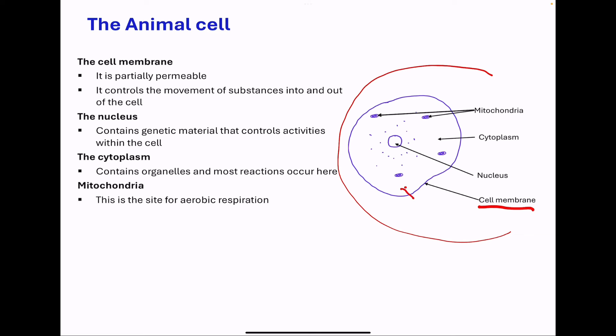For example, oxygen enters into the cell for aerobic respiration, and then carbon dioxide can leave the cell. Also glucose and other substances that are needed in the cell are going to enter through the membrane, and then the waste products are going to pass out of the membrane.